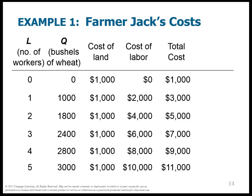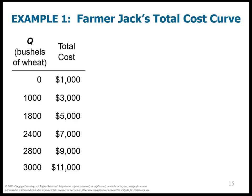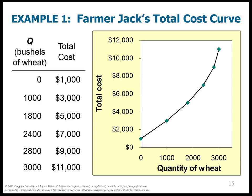His total cost curve plots the quantity column against the total cost column. I put quantity of wheat on the x-axis and total cost on the y-axis, and I see something that is increasing in slope — the slope gets steeper as output rises. That's because each worker is producing less. As I produce more wheat, I have to hire more workers, and each worker produces less because his marginal product is decreasing. So it's just costing more; it's not as efficient.